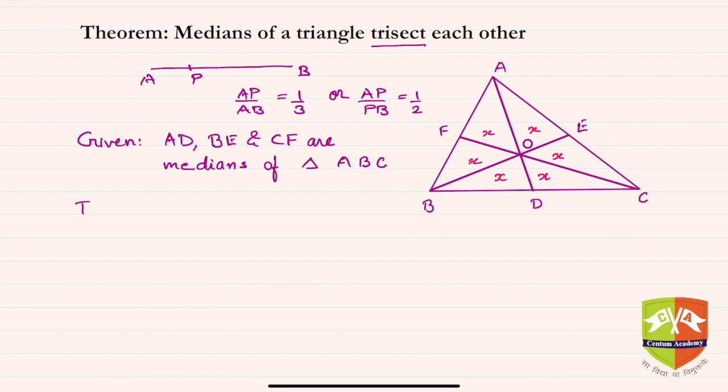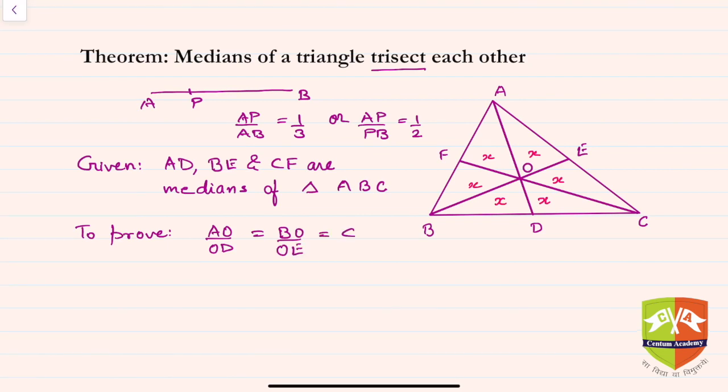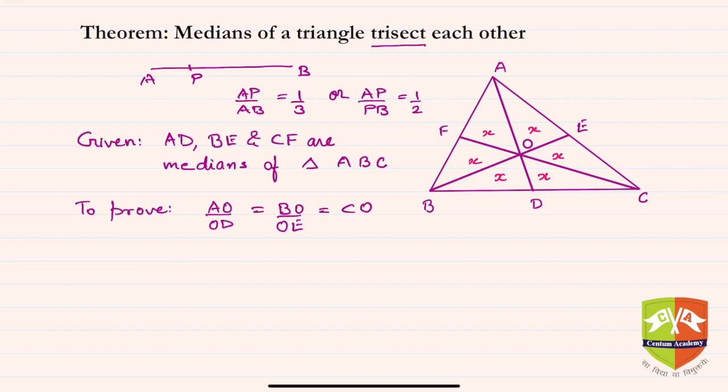To prove: what do we need to prove? We need to prove that AO/OD is equal to BO/OE is equal to CO/OF, all equal to 2/1. This is what we need to prove.